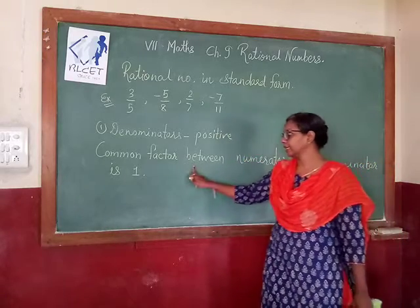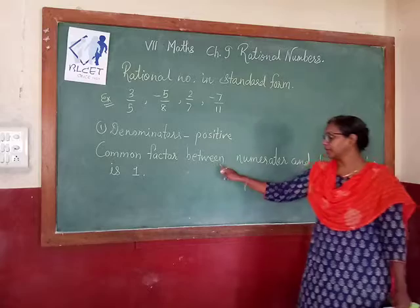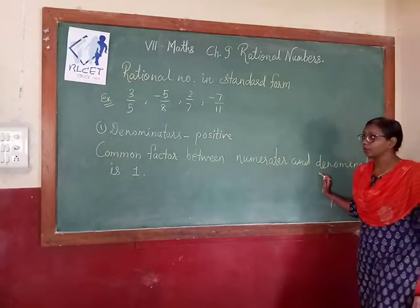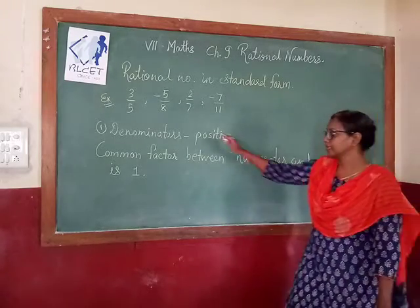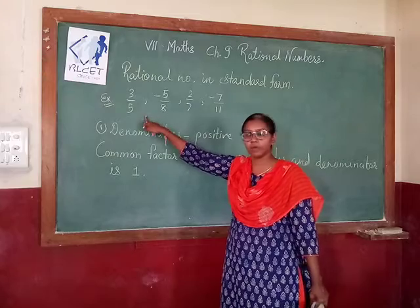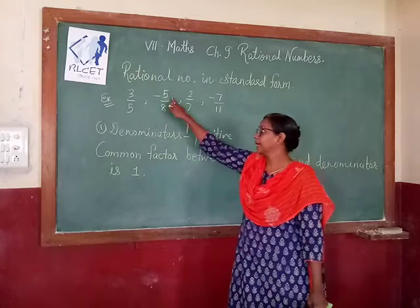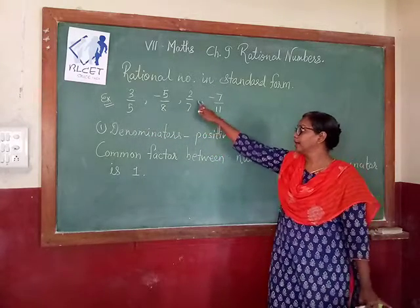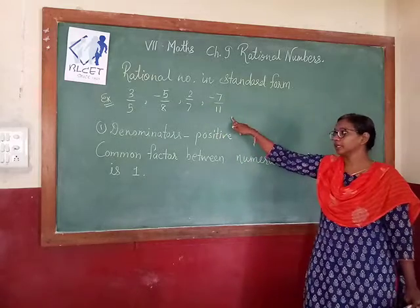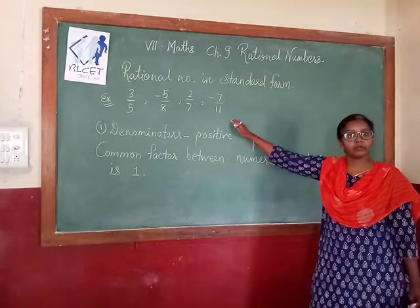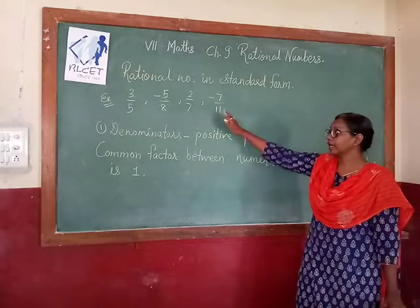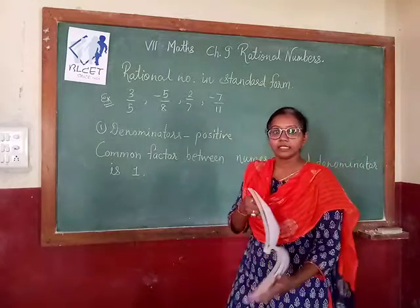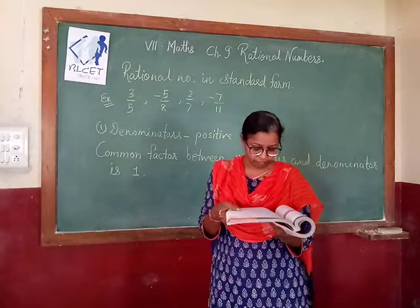The second condition is that the common factor between numerator and denominator is always 1. For 3/5, the common factor is 1; for -5/8, the common factor is 1; for 2/7 and -7/11, in both cases the common factor is 1. Such rational numbers are said to be in standard form.